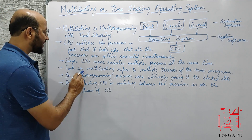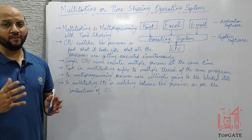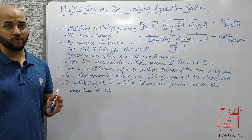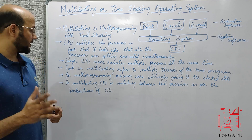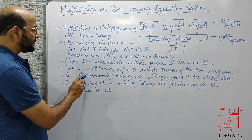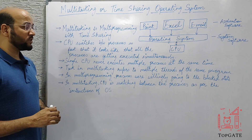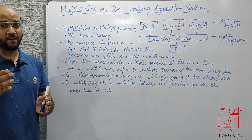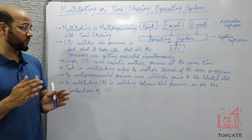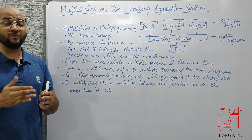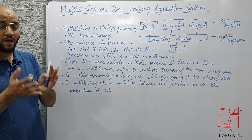The fourth point: the task in multitasking refers to multiple threads of the same program. A program can have several tasks to be done, and all these tasks are called threads of the same program. The next point: in multiprogramming, processes were willingly going to the block state — it was the processes themselves, not the CPU or OS, asking them to go to the block state.